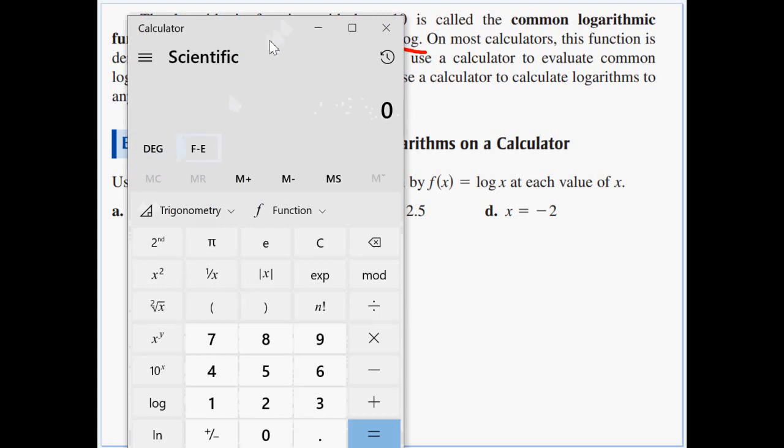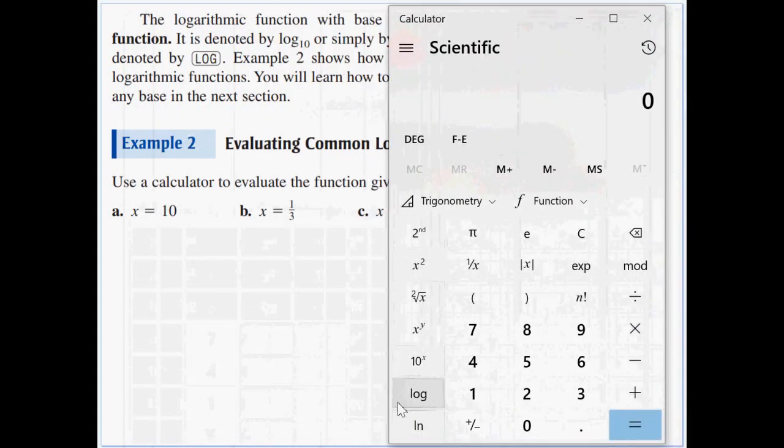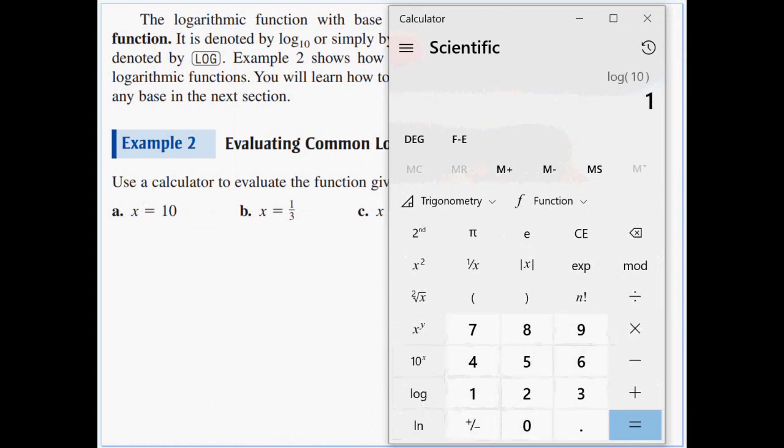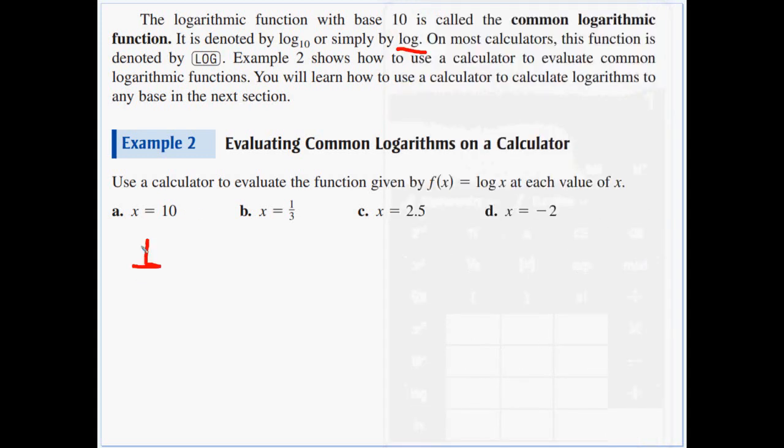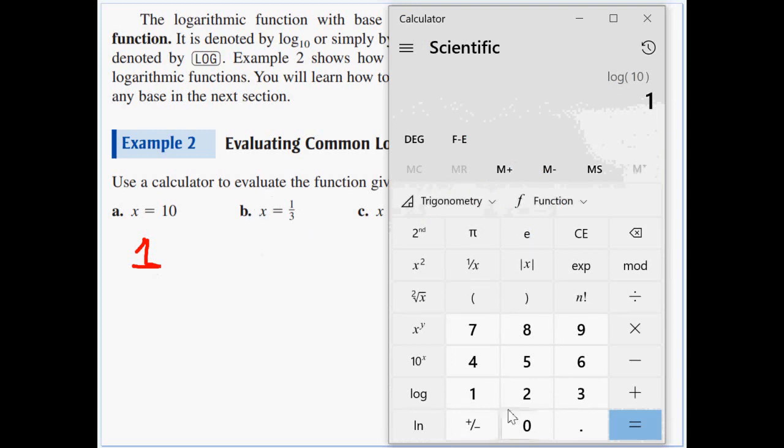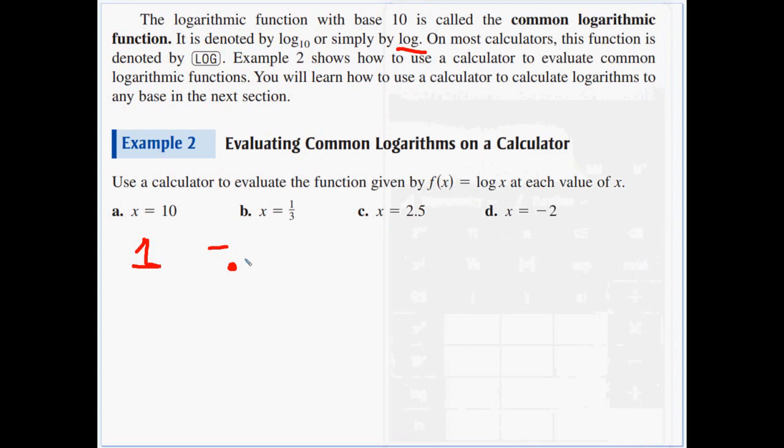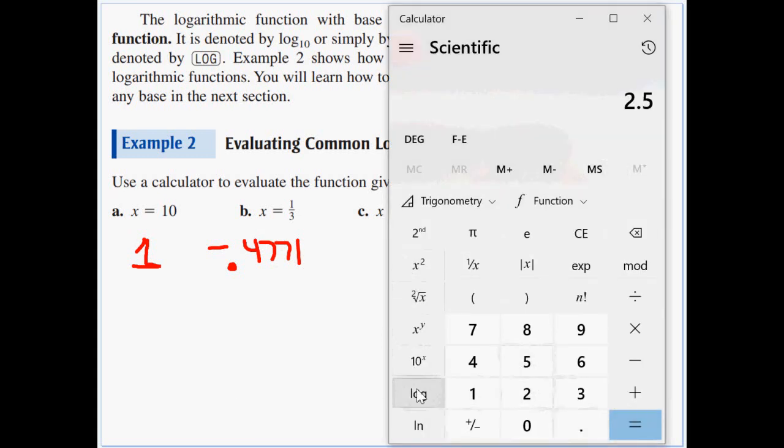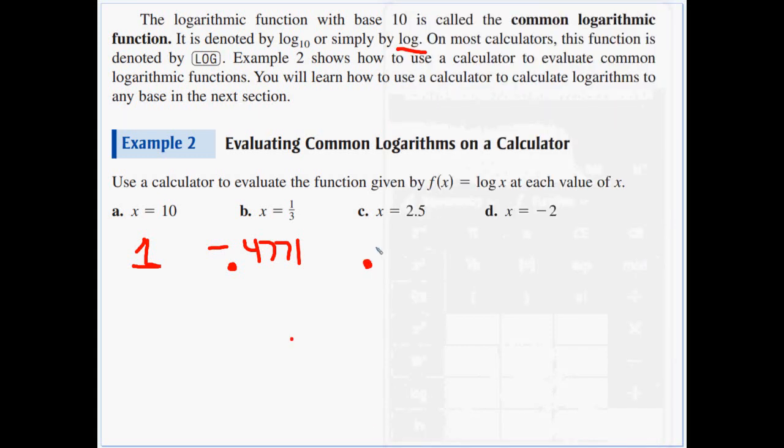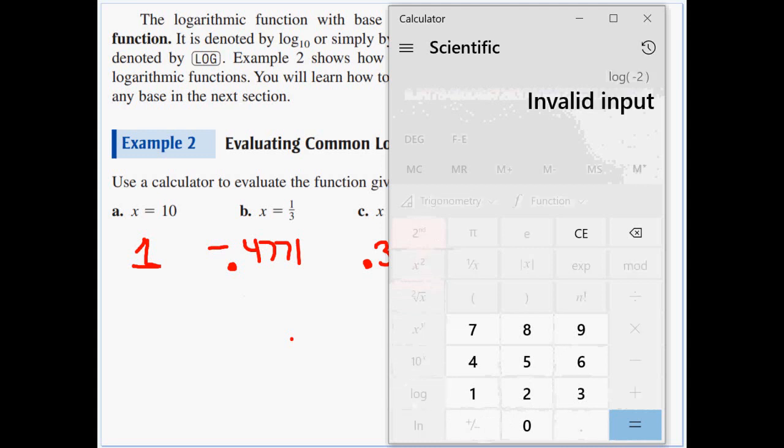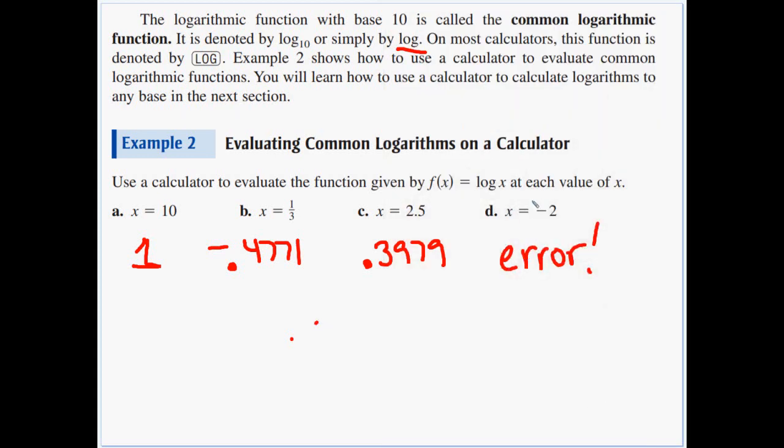Let me grab my calculator here. Log base 10: I'm going to type in 10 and hit the log key, and out pops a 1. For x equals one third, I'm going to do 1 divided by 3 equals, and I'm going to log it. We get negative 0.4771. Next, 2.5, hit the log, 0.3979. And our last one is negative 2: 2 negative, hit the log, boom, invalid input. The calculators in class might say error. You can never log a negative. Logs aren't defined for negative inputs.